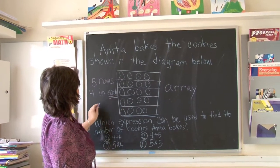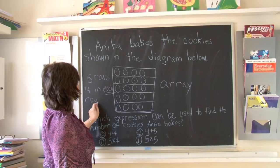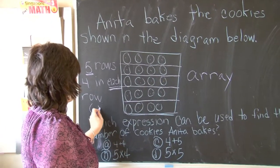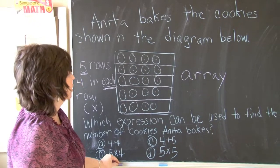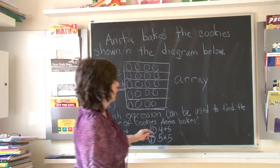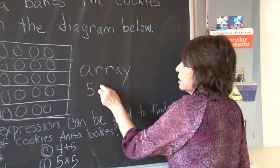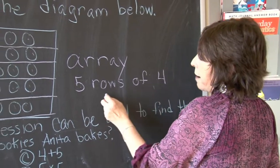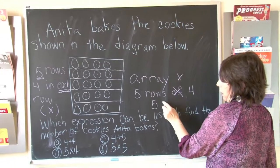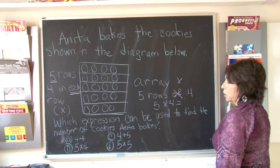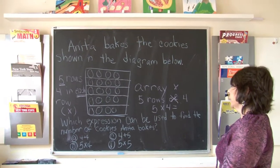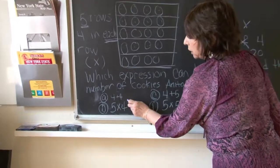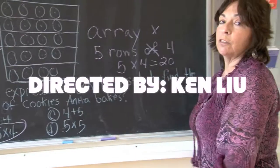If you remember from a few questions back, when you have the same number and you see the word 'each,' it means we multiply. So the correct way of doing this is five rows of four — that's what our array shows. The word 'of' means multiply, so that's five times four. We don't even need the answer; we just need the expression. The correct expression is five times four.